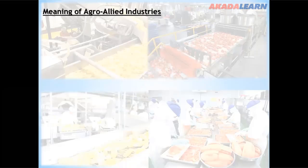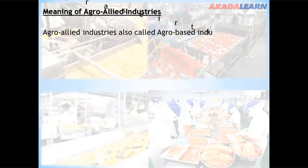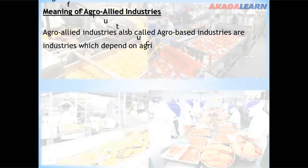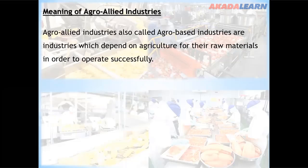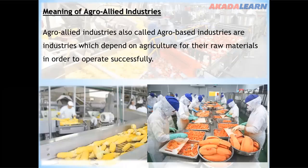What are agro-allied industries? Agro-allied industries, also known as agro-based industries, are industries that depend on agriculture for their raw materials in order to operate successfully.